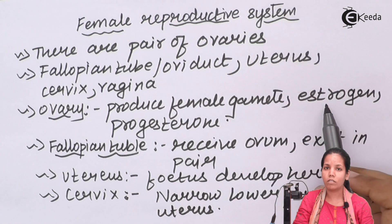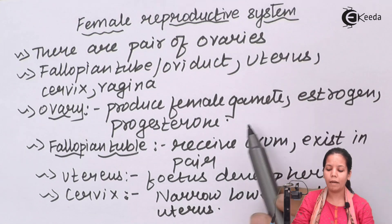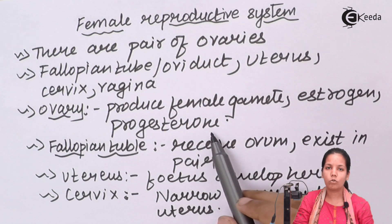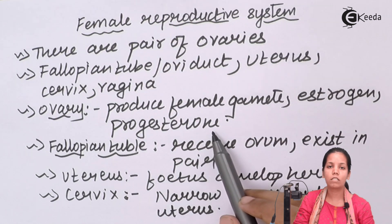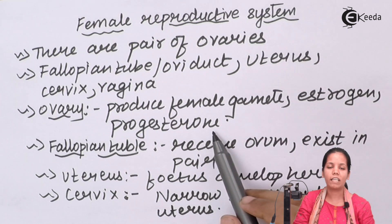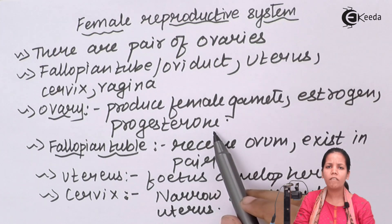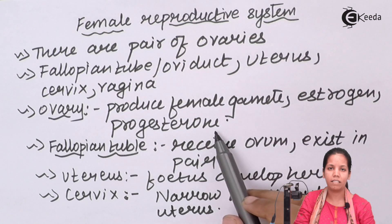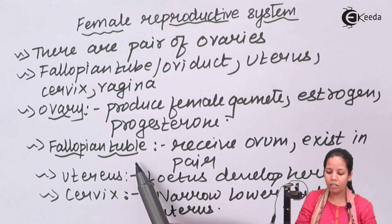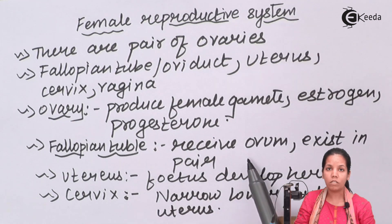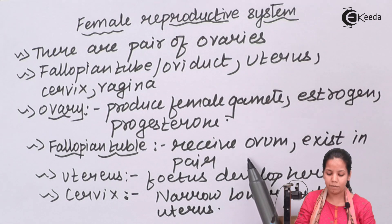Ovaries also produce certain hormones called estrogen and progesterone. These hormones control female secondary sexual characteristics — the way a female looks once she is grown. They are also very important especially during pregnancy. Fallopian tubes receive the ovum once it is formed, and they always exist in pairs.